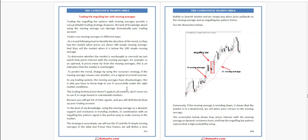Conversely, if the moving averages are trending down, it shows that the market is in a downtrend. We sell when price reacts to the moving averages. The screenshot below shows how prices interact with the moving averages as dynamic resistance, and how the engulfing bar pattern represents a high-probability setup.